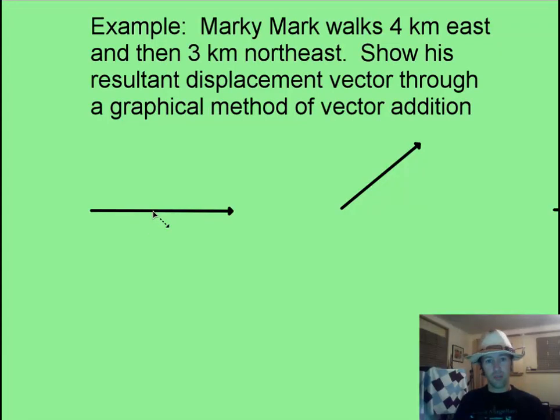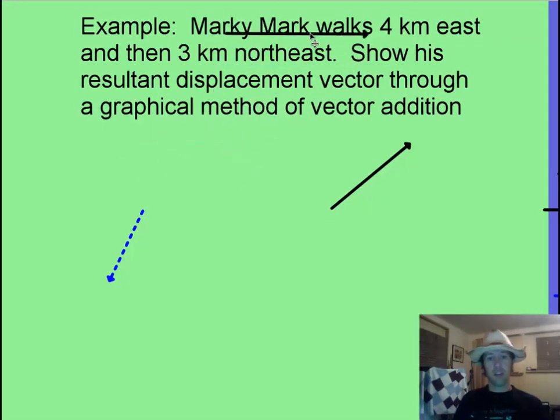For this vector addition problem, that's not what I meant to do. I've got here a 4km east vector, and I've got the 3km northeast vector, and I'm going to add them together. So, I start with one, then I take the second one, and I put its tail on the head of the first one.